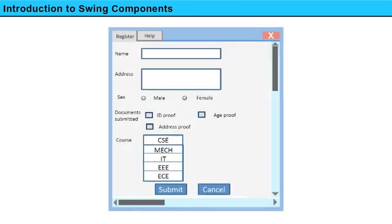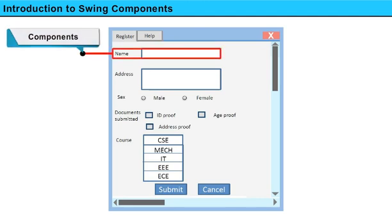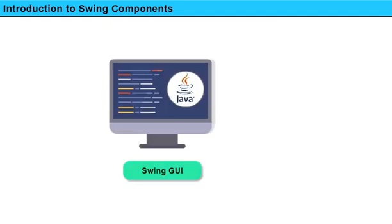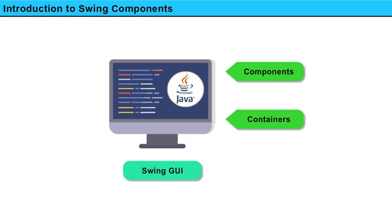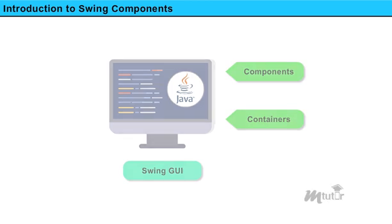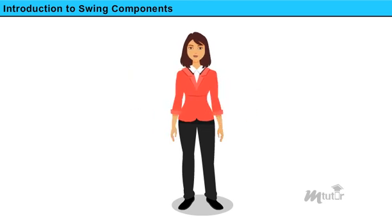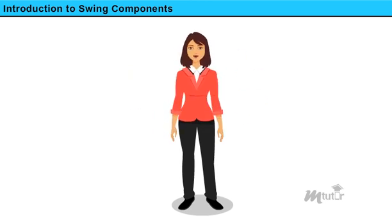To create any application, you need components which make the application work and a container that holds all the components. Swing GUI provides these two key items called Components and Containers. In today's lesson, I will explain about these two features. Come on, let's start.